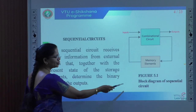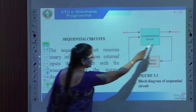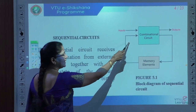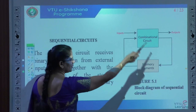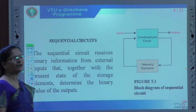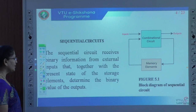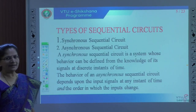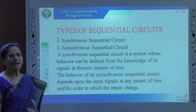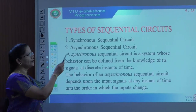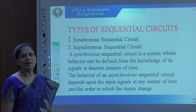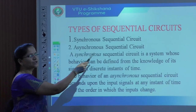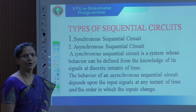The block diagram shows that whatever is taken as a present state is given as input, and whatever output is produced is called the next state. There are two different types of sequential circuits: one is called synchronous sequential circuit, and another is called asynchronous sequential circuit.